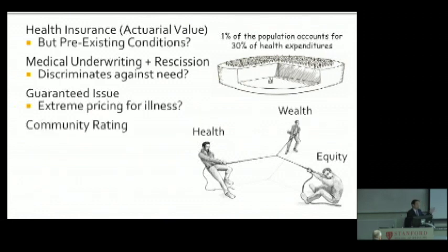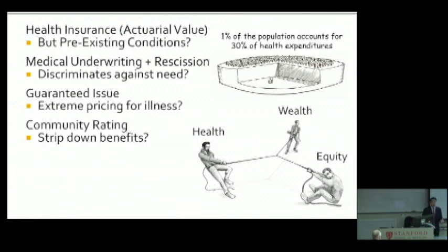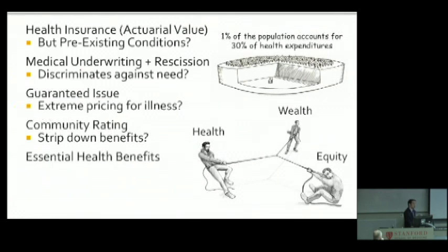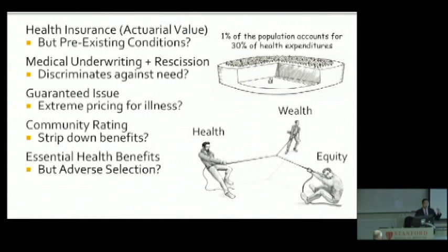You might think we need community rating: you cannot discriminate against people based on pre-existing conditions; everybody in the community is going to be charged the same amount. But then the insurance company says, fine — I'll just strip down your benefits: a $10,000 deductible, maximum payout of $50,000, only covering hospitalizations, no prescription drugs, no outpatient services. So maybe we need more rules — define essential health benefits, a minimum standard that counts as health insurance. There were even some states before the ACA that basically did this, but they had to back off because of adverse selection.